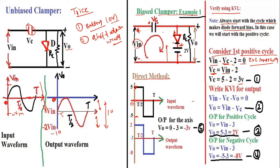In the inner loop KVL: minus to plus Vin, then plus to minus Vc, then the 2V battery gives us Vin - Vc - 2 = 0. The capacitor charges to Vc = Vin - 2. Since we started with positive cycle where Vin maximum is 5V, we get Vc = 5 - 2 = 3V.